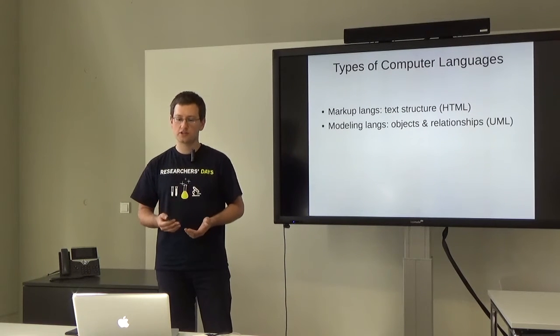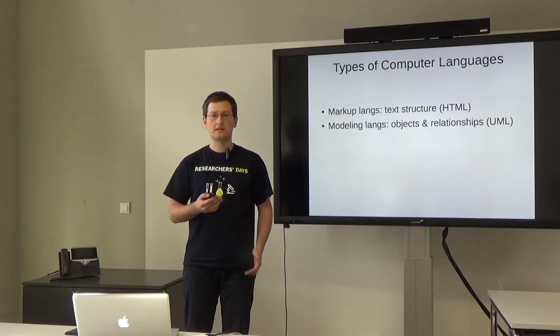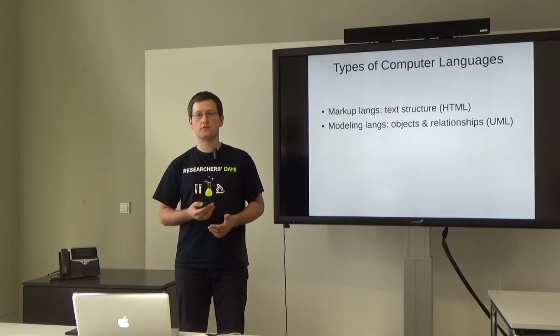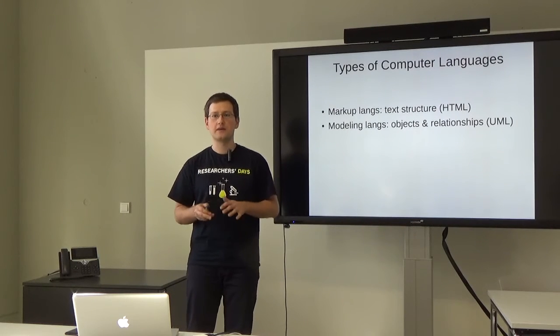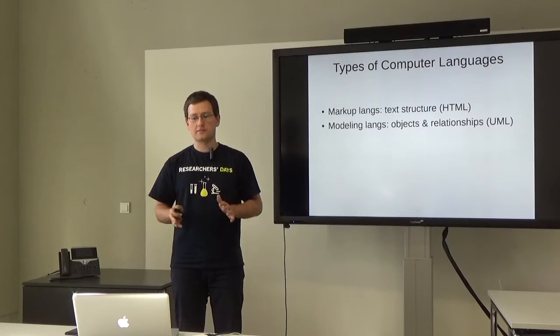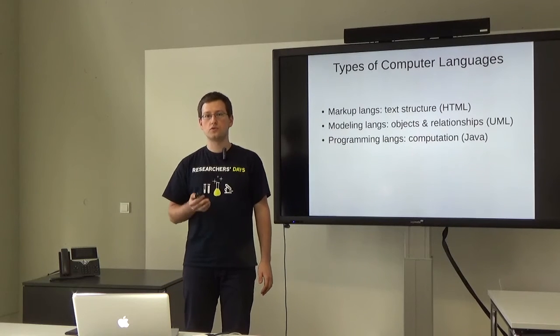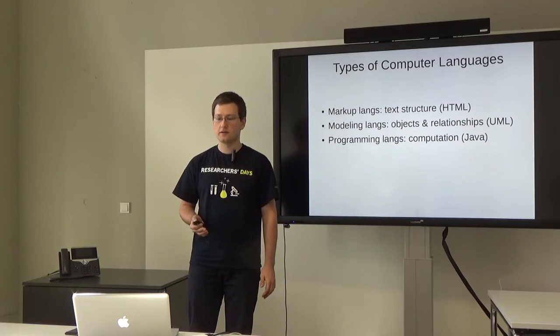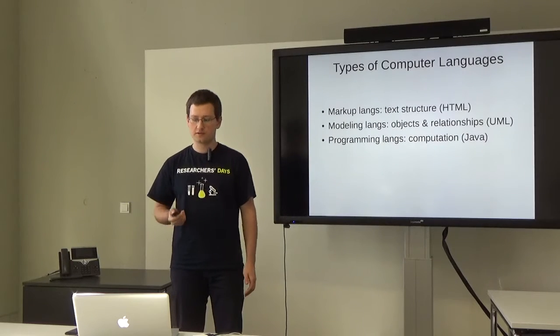Other kinds of languages are modeling languages that model relationships between some objects. They are used, for example, in the industries to model complicated relationships between some industrial equipment. And of course, there are programming languages that are used to model computation. For example, Java or Python or C++. You may be familiar with some of these languages.